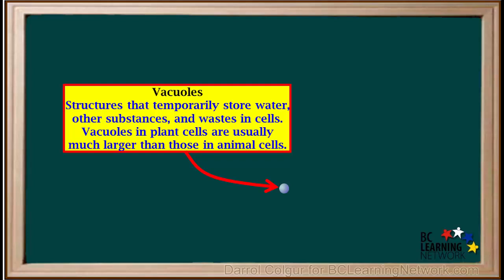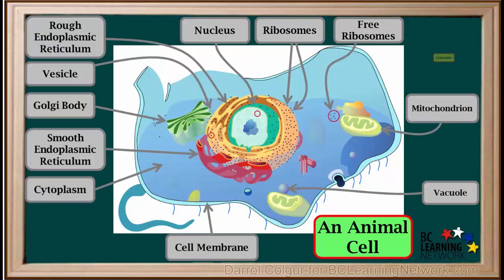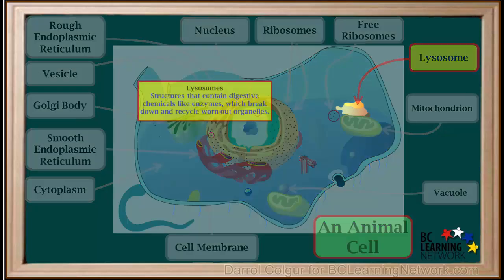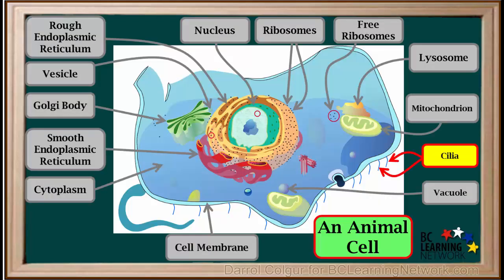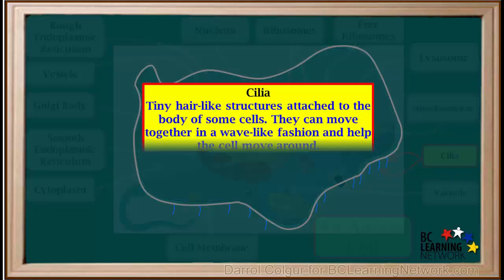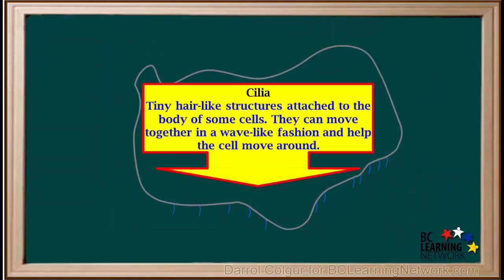Vacuoles in plant cells are usually much larger than those in animal cells. Lysosomes are structures that are also found within the cytoplasm of cells. Lysosomes contain digestive chemicals like enzymes, which break down and recycle worn-out organelles. Many animal cells have little hair-like organelles on the outside called cilia. Cilia are tiny hair-like structures attached to the surface of some animal cells.